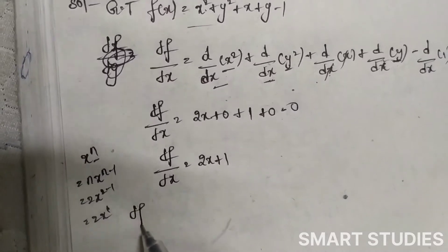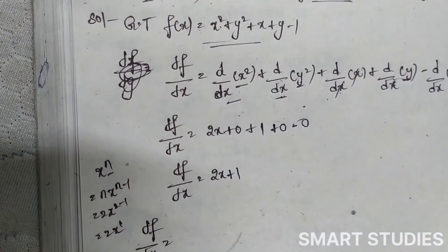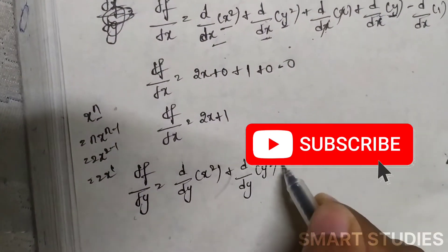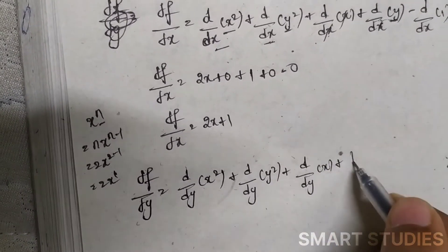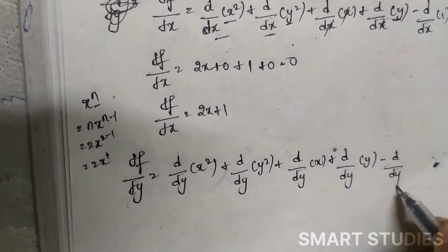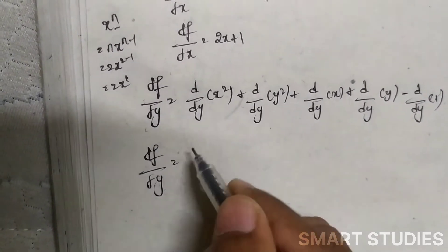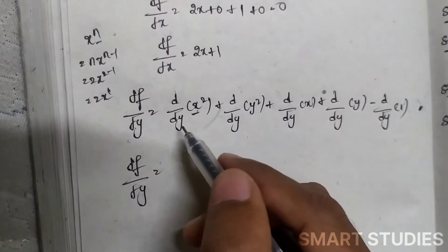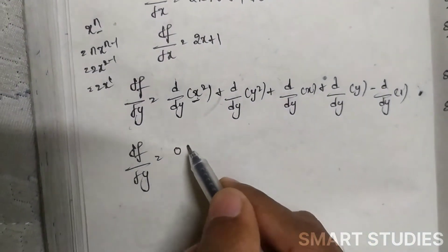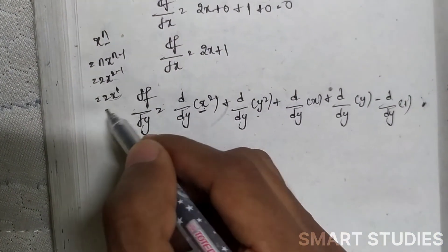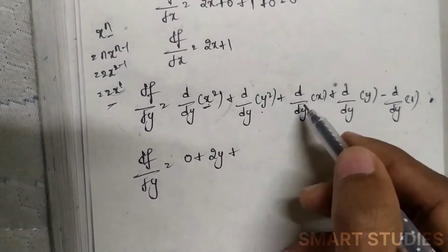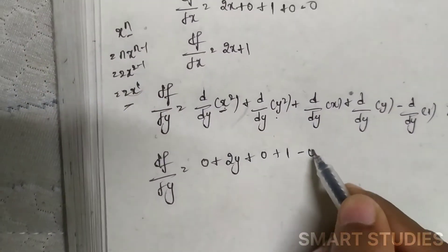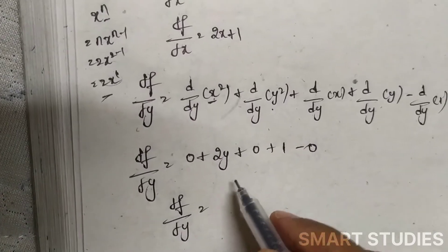Now we differentiate with respect to y: ∂f/∂y = d/dy(x²) + d/dy(y²) + d/dy(x) + d/dy(y) − d/dy(1). Here d/dy(x²) = 0 (different variable), d/dy(y²) = 2y, d/dy(x) = 0, d/dy(y) = 1, and d/dy(1) = 0. So ∂f/∂y = 2y + 1.